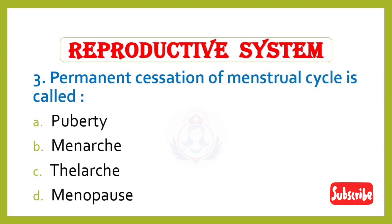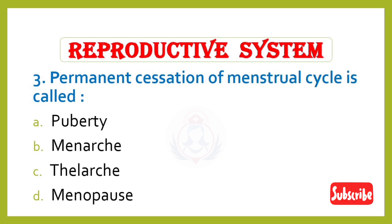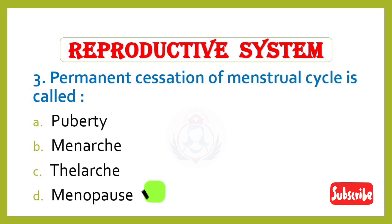Question 3. Permanent cessation of the menstrual cycle is called: Option A – Puberty, Option B – Menarche, Option C – Thelarche, Option D – Menopause. Correct answer is Option D: Menopause.